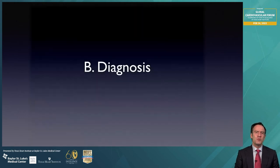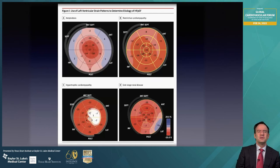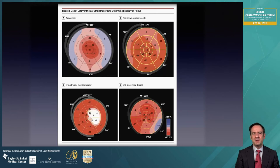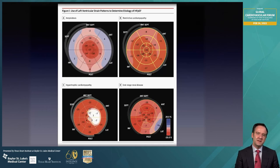In terms of diagnosis, when I was at Cleveland Clinic, our group was the first to report on the use of global longitudinal strain to make a specific diagnosis. Specifically, I'm talking about the patient with amyloid in the left upper panel. The patient with cardiac amyloidosis has a very specific appearance called apical sparing, or cherry-on-top appearance. The explanation is that the last area affected in cardiac amyloidosis is the apex — with the base and mid-segments being affected and the apex relatively spared.